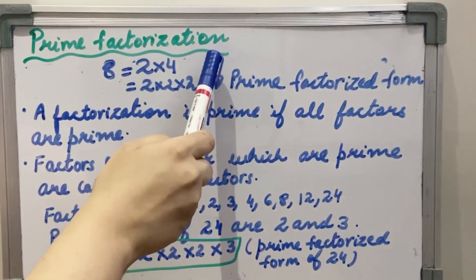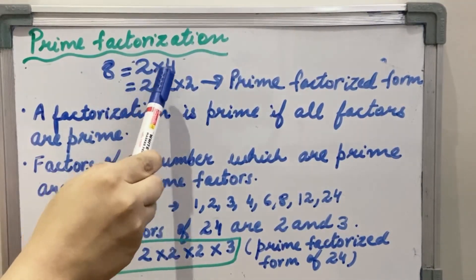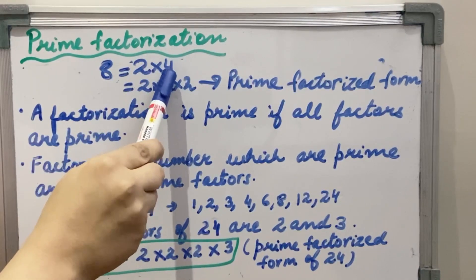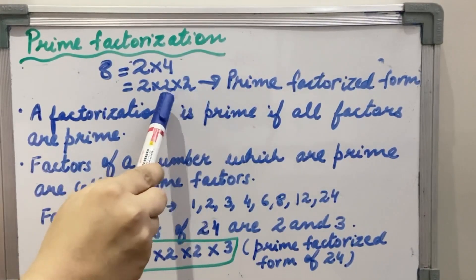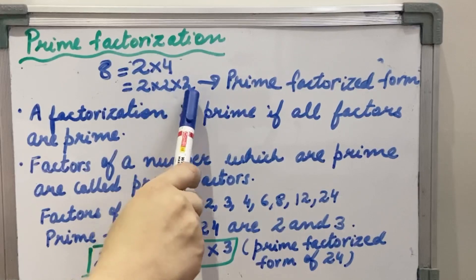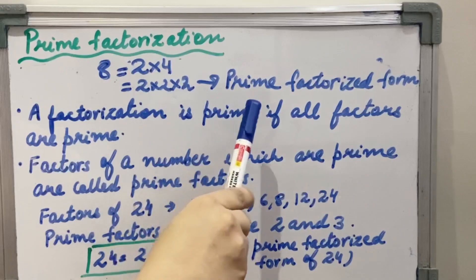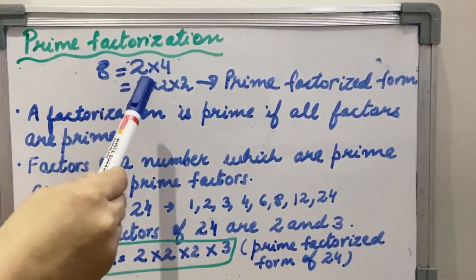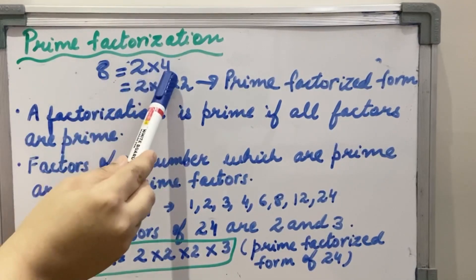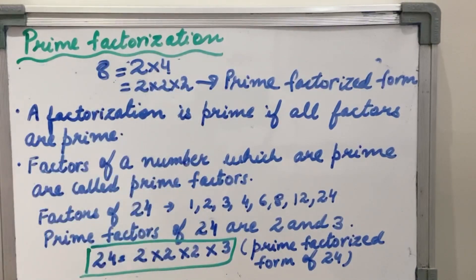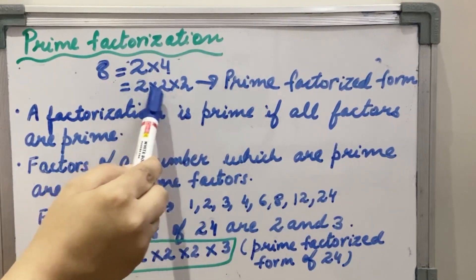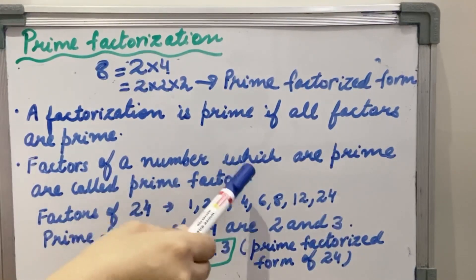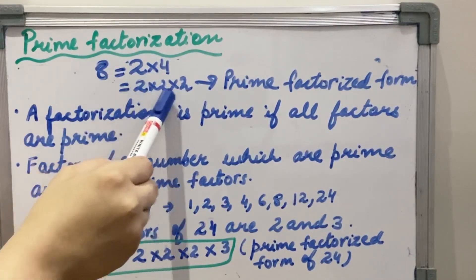Now I am taking prime factorization. For this I am taking 8 = 2 × 4, which can be rewritten as 2 × 2 × 2. Why? Because 4 is a composite number, so I have split it further into a product of 2 prime numbers. So 2, 2, 2 are all prime numbers and this type of factorization is known as prime factorized form. A factorization is prime if all the factors are prime. Factors of a number which are prime are called prime factors.